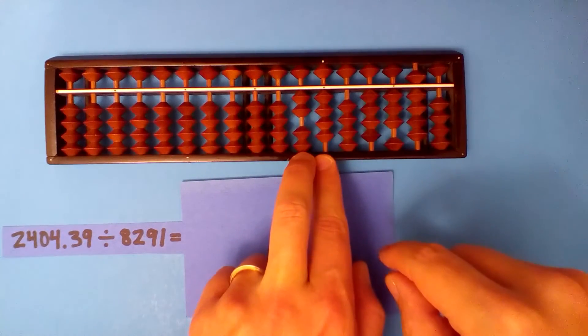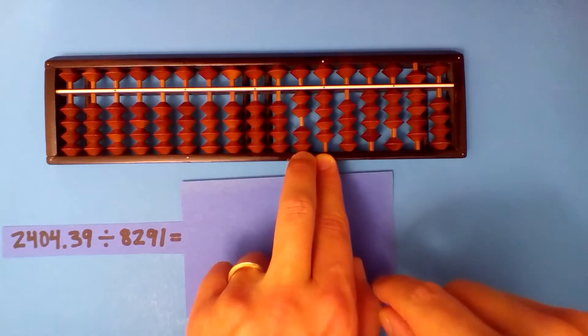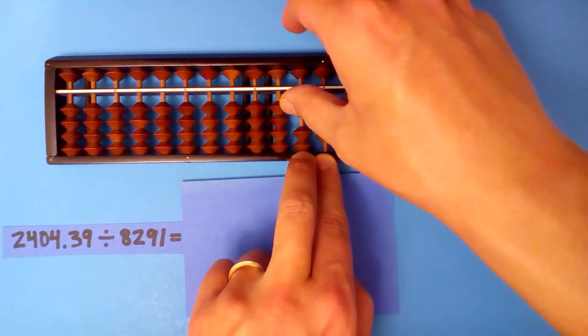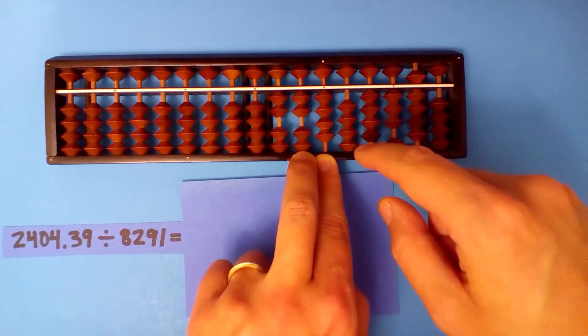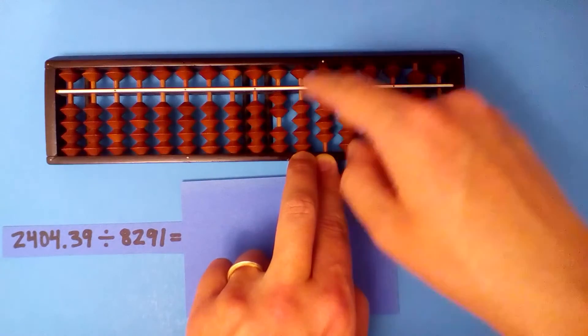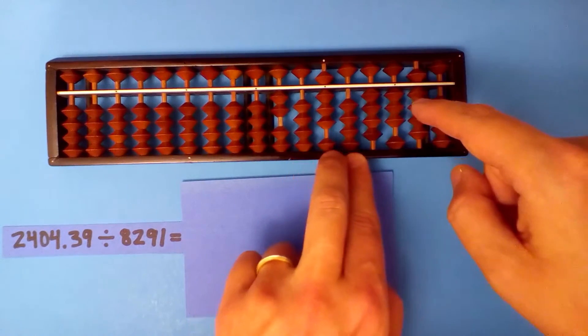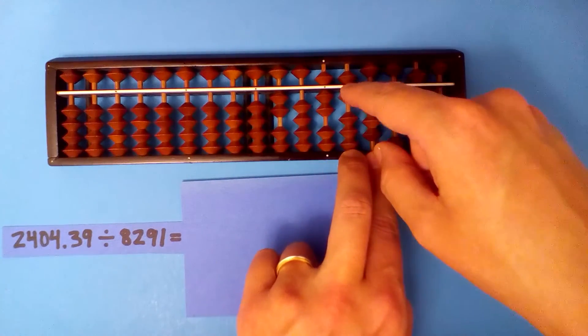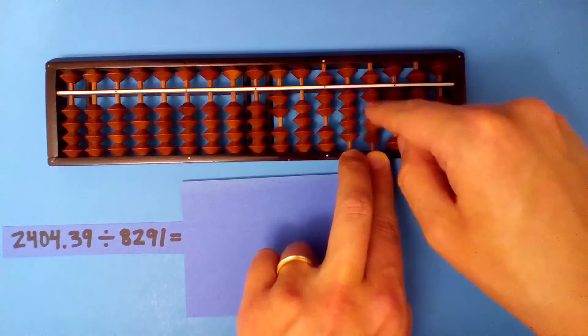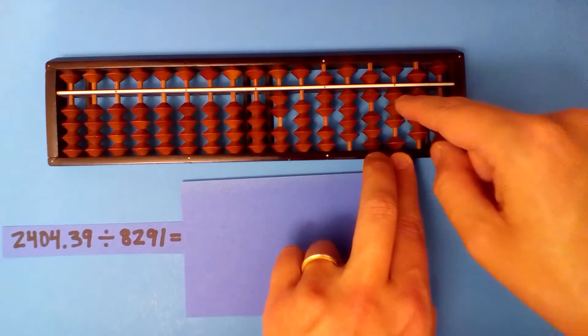Eight into twenty-four, I think three is going to be too much, so we'll just say two. And multiply and subtract. Two times eight sixteen, two times two four, two times nine eighteen, two times one two.